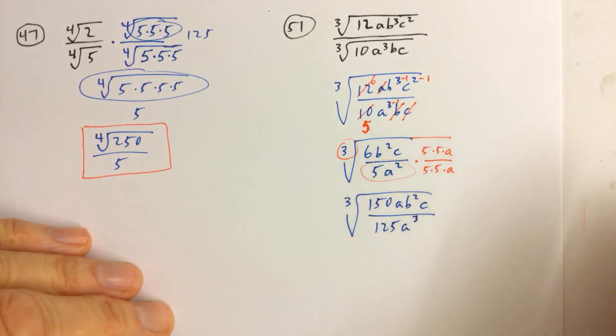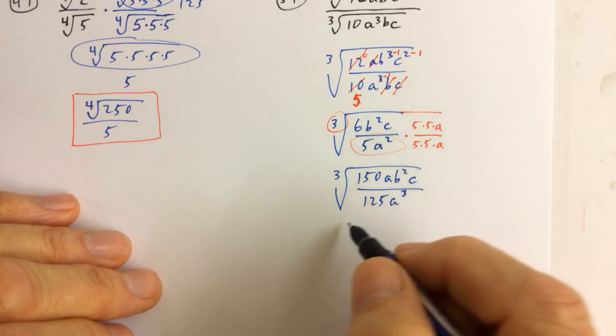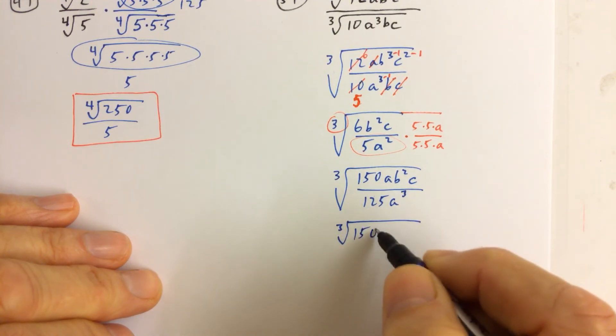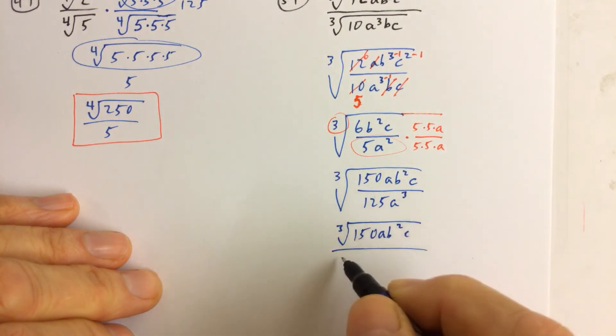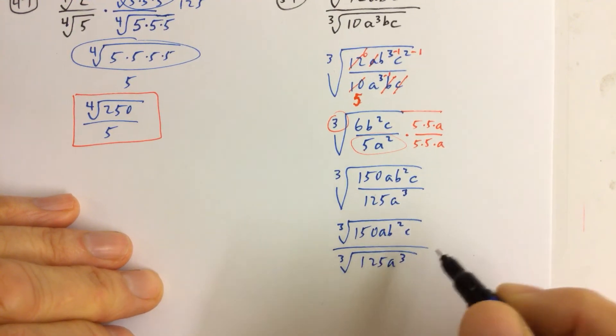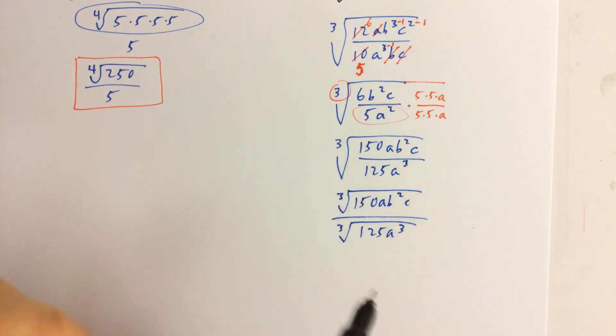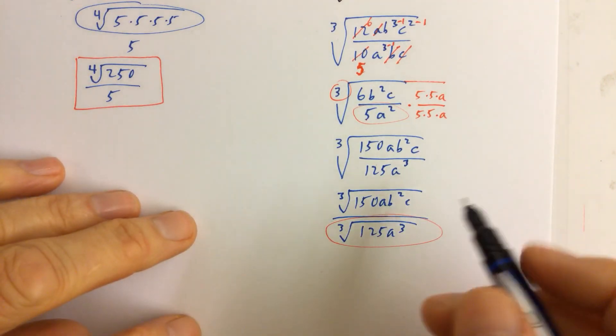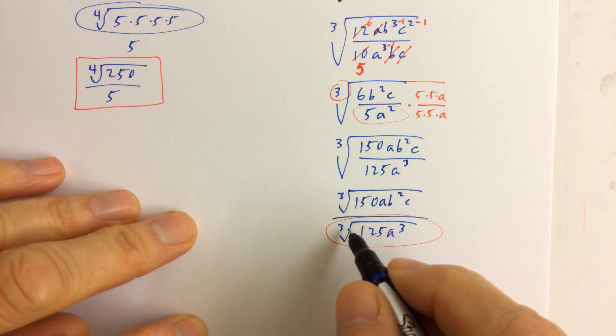Well, at this point, it's good to notice and understand that you can split it back up. You could have done this earlier. Cube root of 125a cubed. And by seeing that, again, that's the reason why we multiplied both top and bottom by this cube root of 25a. So now we have